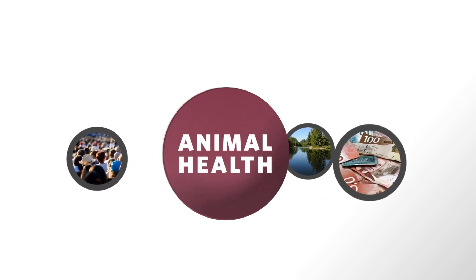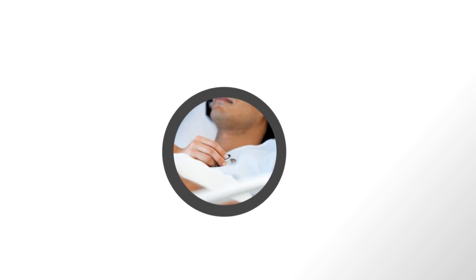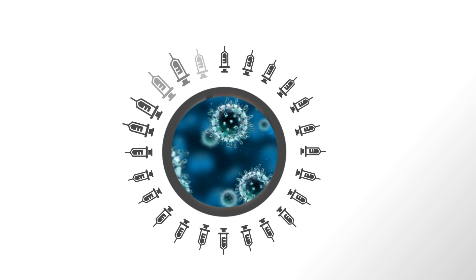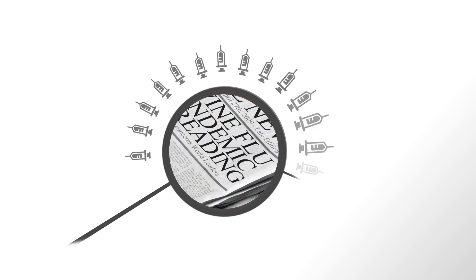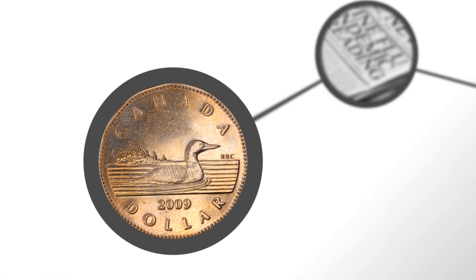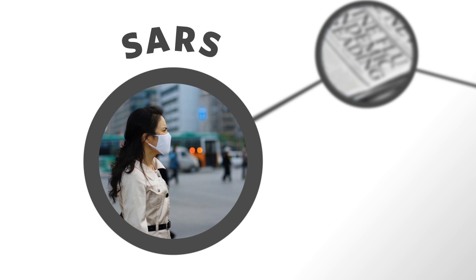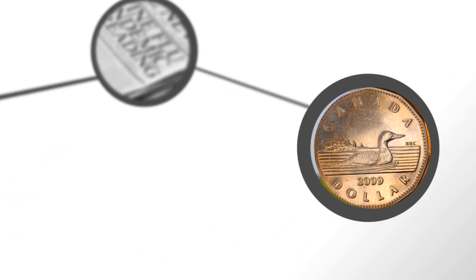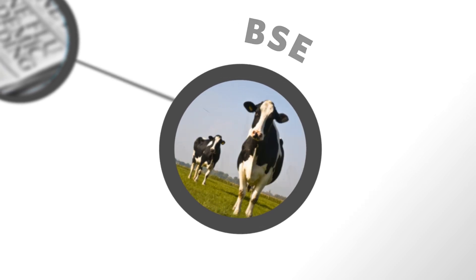We know that some diseases with animal origins can cause illness in humans, such as H1N1, which resulted in Canada's largest vaccination campaign to date. Many animal diseases can also have major economic consequences. For example, the SARS outbreak is estimated to have cost the Toronto economy close to $1 billion, while the 2003 BSE scare cost Canada close to $6 billion.